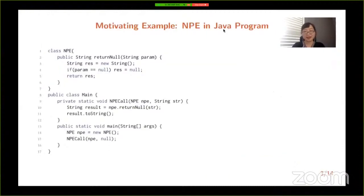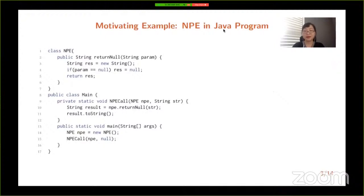Now let's see a motivating example. This is a part of a Java program which actually contains a null pointer exception. If we look at this code in more detail, we can see there are two classes: main and MPE. The MPE class only contains one method named returnNone. This method takes a string as a parameter, and if this parameter equals to none, the whole method returns none. The main class contains two methods: the main method and a private method named MPE call, which invokes both the returnNone method of MPE class and also the toString method.